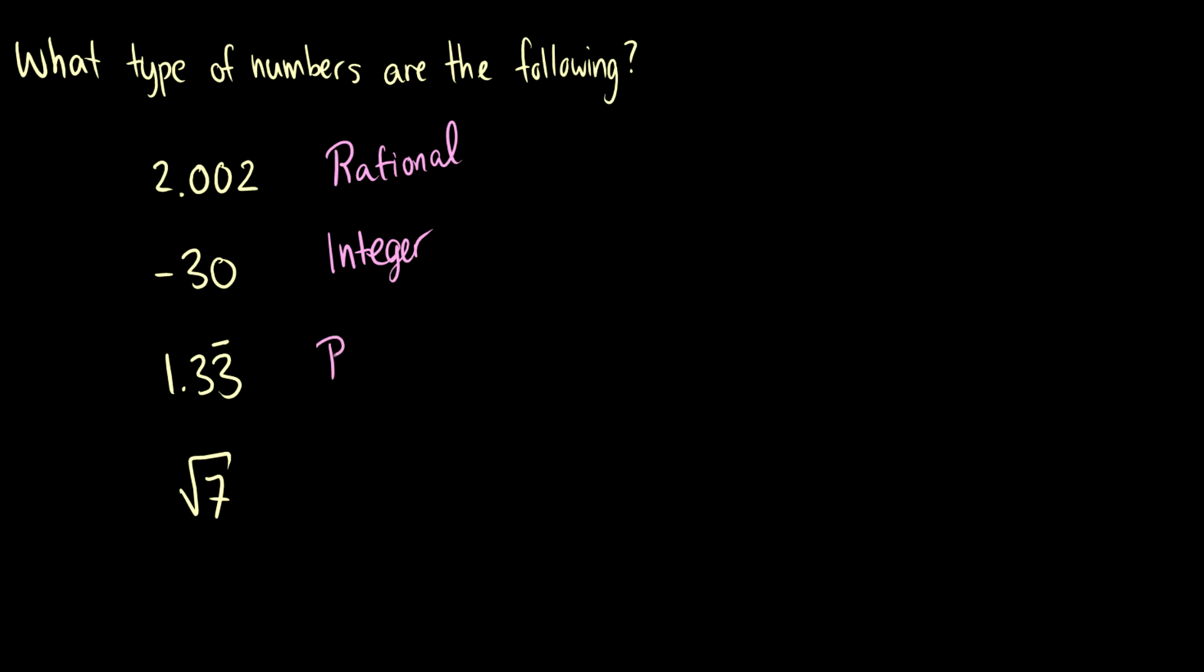And let's guess that it's rational, but we should verify. How else could we write 1.33 repeating? Well, we can write this as one plus one third, or we could write four thirds, that's the same thing. So we could write it as a fraction, therefore it's rational.